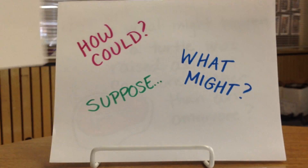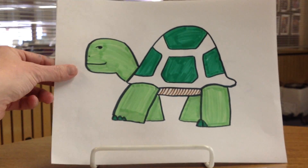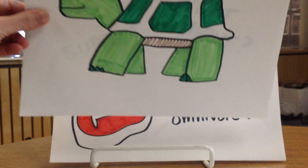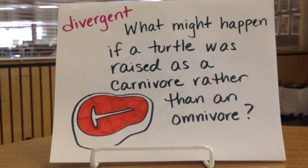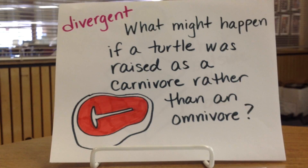Let's go back to our turtle again. If we take our convergent question of what does a turtle eat, and make it divergent, we could ask: what might happen if a turtle was raised as a carnivore rather than an omnivore? Notice I'd have to do a little more research on my convergent question as background to learn what turtles eat first, which then leads me to create a divergent question and seek out even more information.